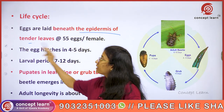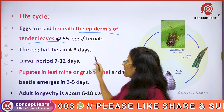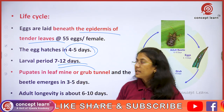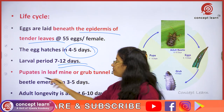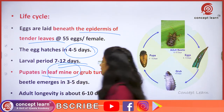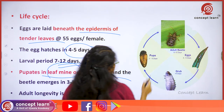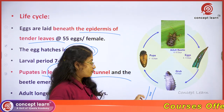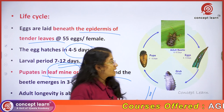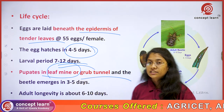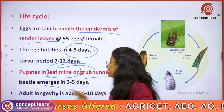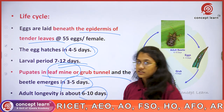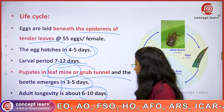In the life cycle, eggs are laid beneath the epidermis of tender leaves and hatch within 4 to 5 days. The larval period lasts for 7 to 12 days, and pupation occurs within the leaf mine. The beetle emerges within 3 to 5 days after pupation, and the total life cycle lasts for about 6 to 10 weeks.